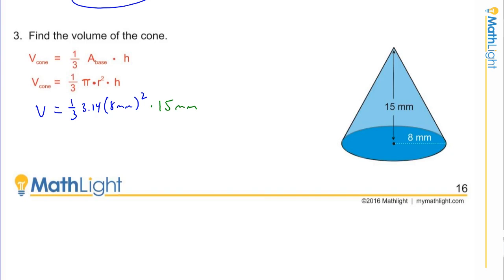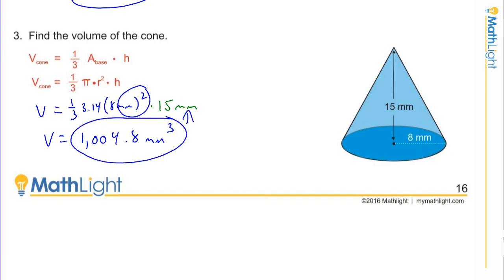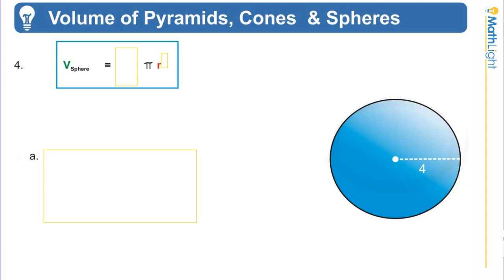Evaluate all exponents first: 8 squared is 64. Then 64 times 3.14 times 15, divided by 3, gives 1004.8. The units are millimeters cubed, because millimeters squared times millimeters is millimeters cubed. Volume should always have cubic units. If your teacher wants you to use the approximate symbol, that's fine because we are rounding pi, and pi never ends.